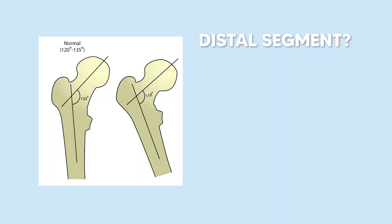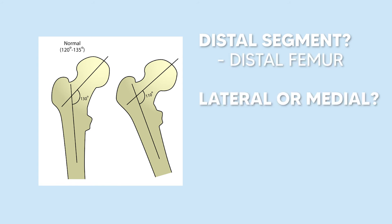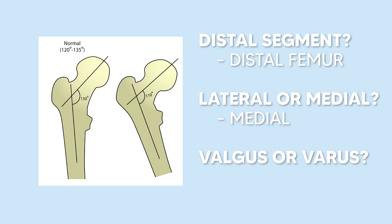Looking at the angle of inclination of the femur, the distal segment isn't another bone — it's just the distal end of the femur. Looking at the distal end, is it more lateral or more medial? In this case it's more medial, so this would be a varus, described as a coxa vara. That does it for valgus and varus — thanks for watching and good luck on your next test.